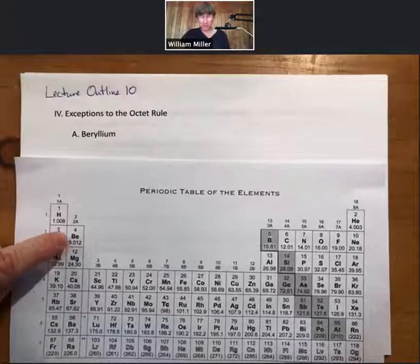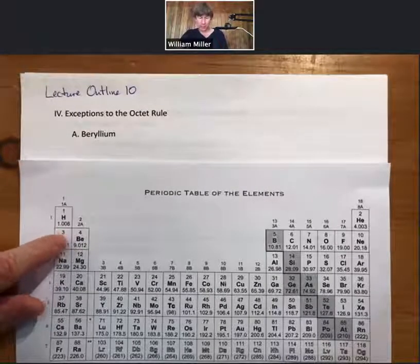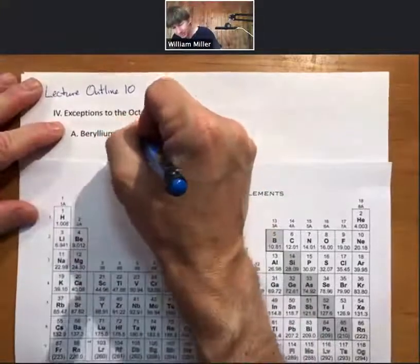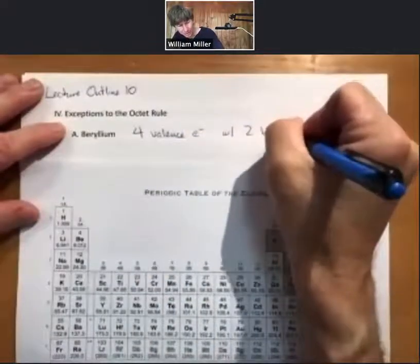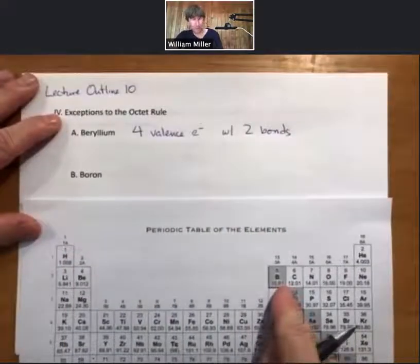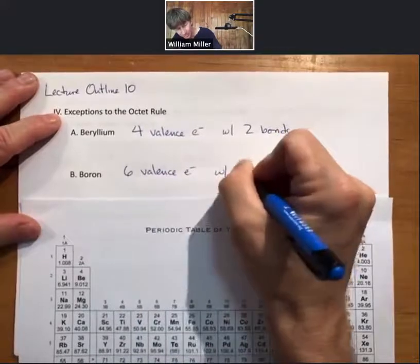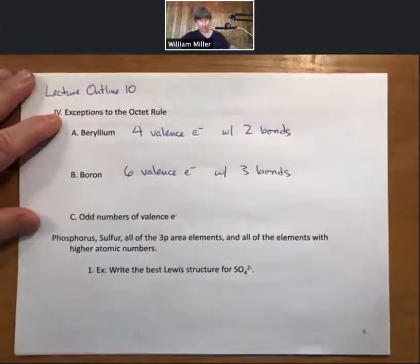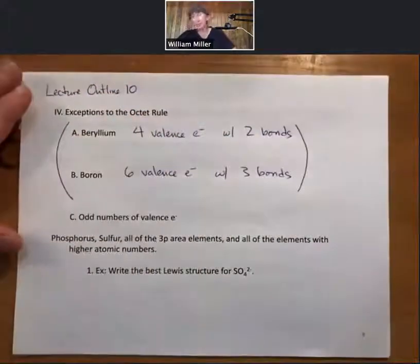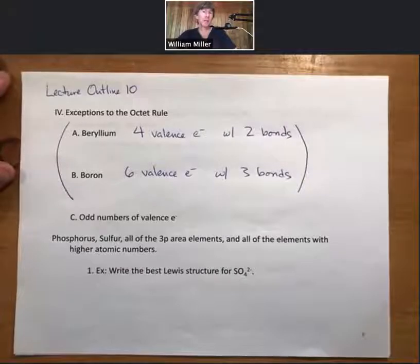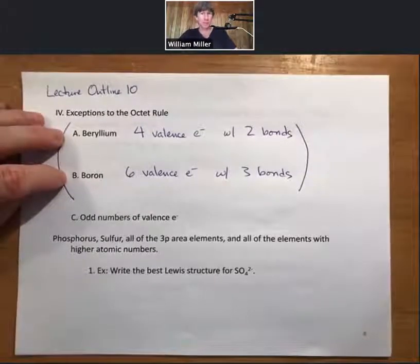Beryllium is near the top of the periodic table. For now, we'll say that Beryllium likes to have four valence electrons instead of eight, typically with two bonds. Boron, the next element, likes to have six valence electrons with three bonds. These are in parentheses because you're not expected to memorize them, but we'll use them in future lectures — just be aware of them.